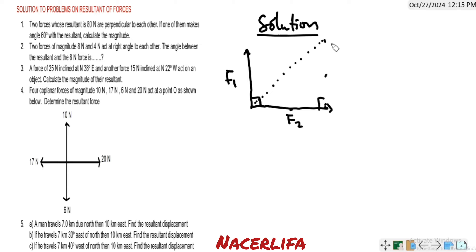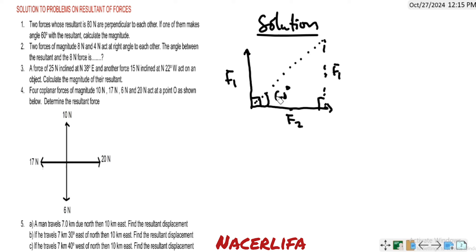This side will be the same as this side, so this will be F1. If one of these forces makes angle 60 degrees with the resultant, this is 60 degrees. So it means that F2 — this force here — makes angle 60 degrees with the resultant.